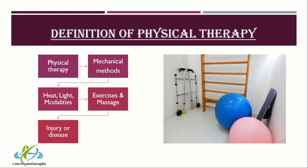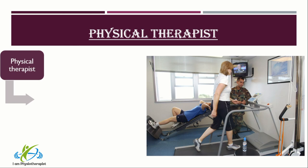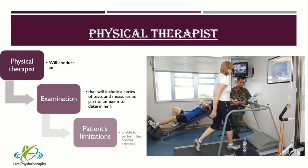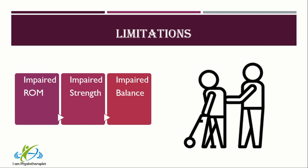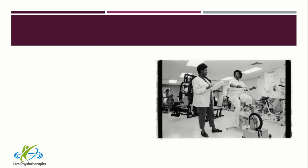A physical therapist will conduct an examination that includes a series of tests and measures to determine a patient's limitations. These impairments or limitations are the reasons why the patient is unable to perform their normal activities. Impaired range of motion, strength, and balance are classic examples of impairments addressed by physical therapy. These restrict a patient's ability to perform tasks such as squatting, jumping, or standing on one leg, resulting in functional limitations.